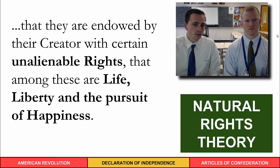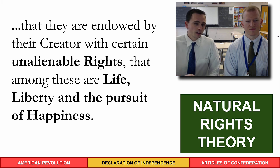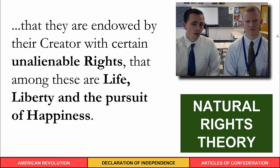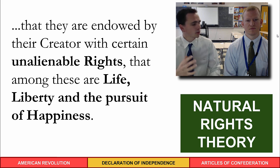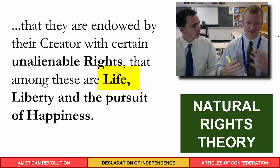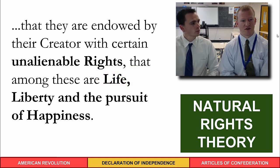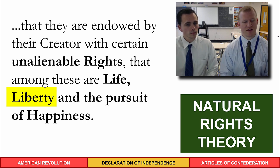The next part refers to natural rights theory: that people are 'endowed by their Creator with certain unalienable rights, that among these are life, liberty, and the pursuit of happiness.' This is almost word for word from Locke's natural rights theory of life, liberty, and property — Jefferson changed 'property' to 'pursuit of happiness.' These rights are constant — no matter what government system is set up, whether democracy or dictatorship, these rights cannot be taken away.